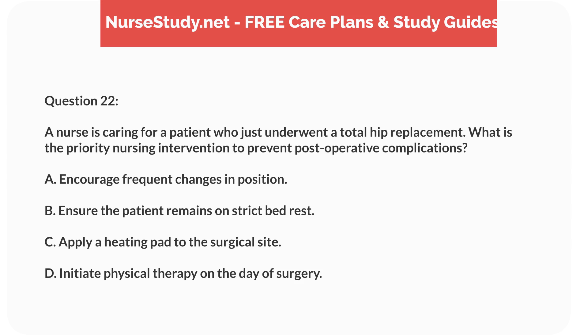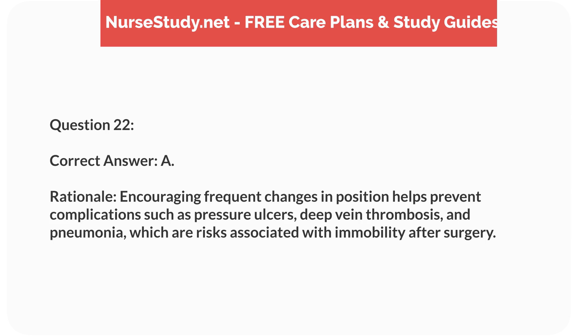Question 22. A nurse is caring for a patient who just underwent a total hip replacement. What is the priority nursing intervention to prevent post-operative complications? A. Encourage frequent changes in position. B. Ensure the patient remains on strict bed rest. C. Apply a heating pad to the surgical site. D. Initiate physical therapy on the day of surgery. Correct answer: A. Rationale: encouraging frequent changes in position helps prevent complications such as pressure ulcers, deep vein thrombosis, and pneumonia, which are risks associated with immobility after surgery.